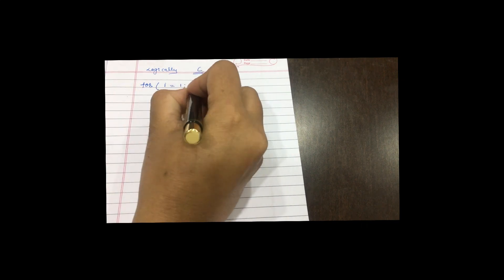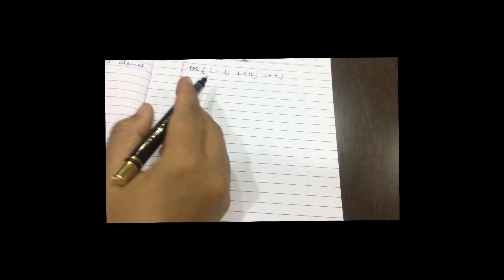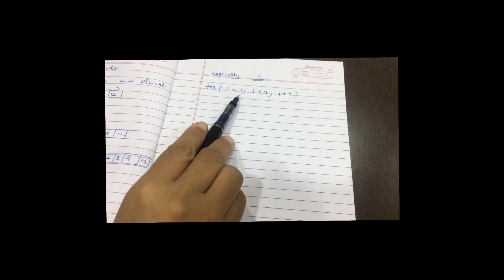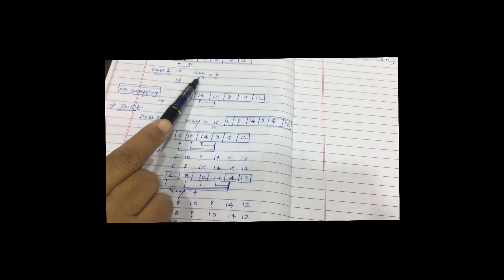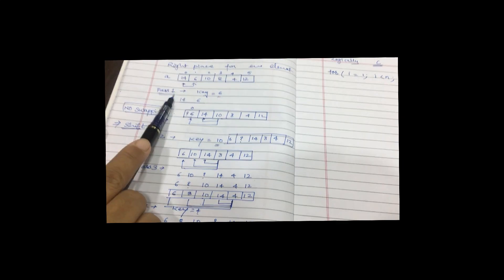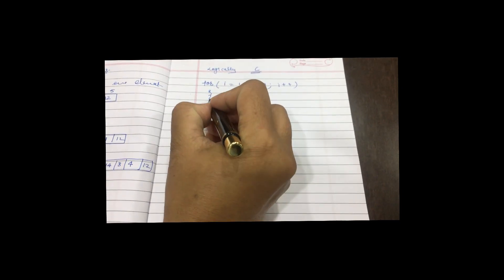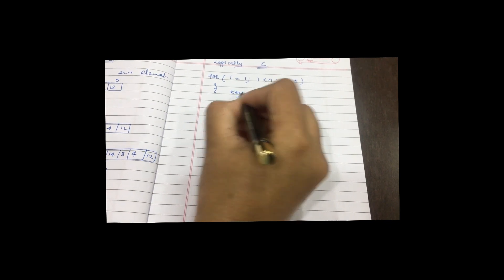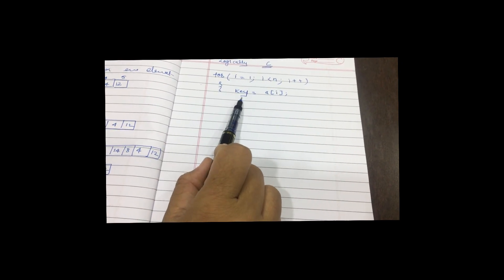Now we will see how to implement this algorithm logically using C programming. We write a for loop: for i equal to 1, i less than n, i plus plus. The loop starts at 1 because the key element always starts at index 1. Inside the loop, we save the key element: key equal to A of i.